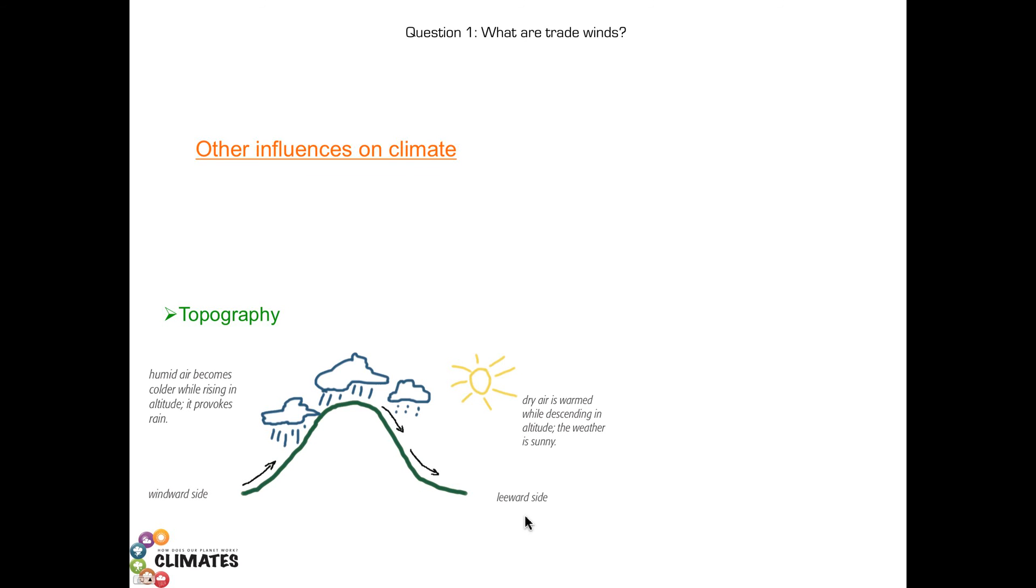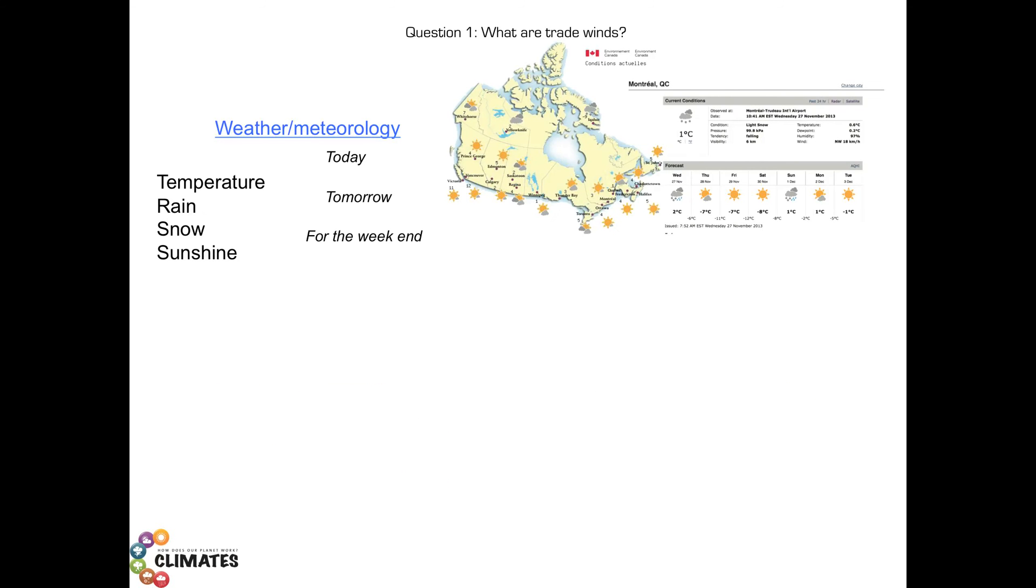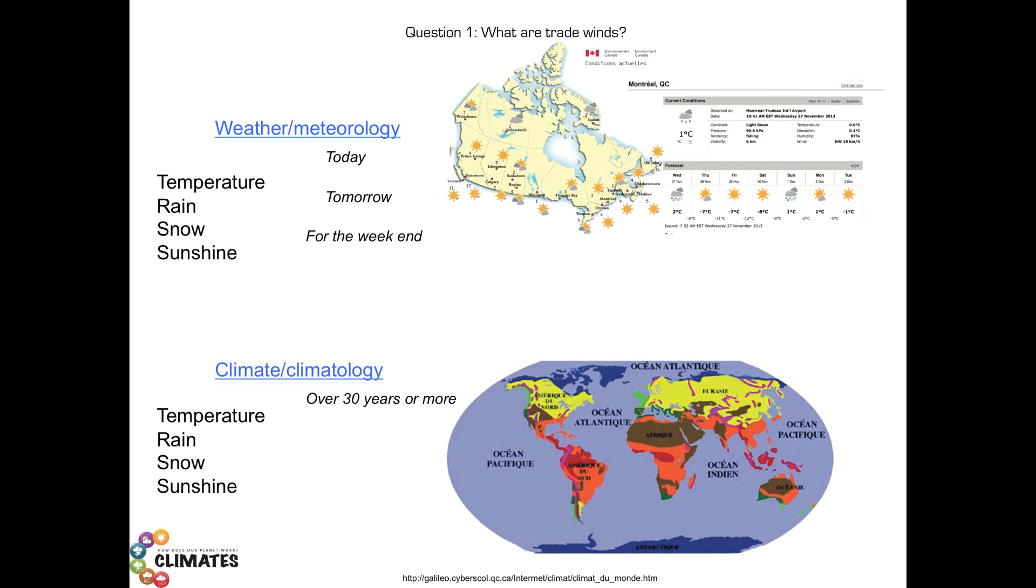A last concept I would like to talk about in this video is about the difference between weather and climate. When we speak about weather or its science, meteorology, you will probably think of temperature, quantity of rain, quantity of snow, duration of sunshine.